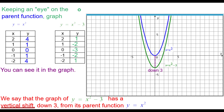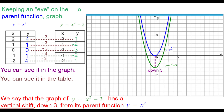You can see it in the graph that it's down 3. You can see it in the table — all the y-coordinates are down 3. And you can see it in the equation — the minus 3 means down 3.